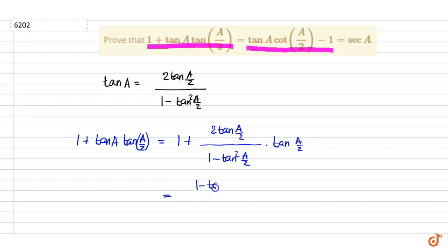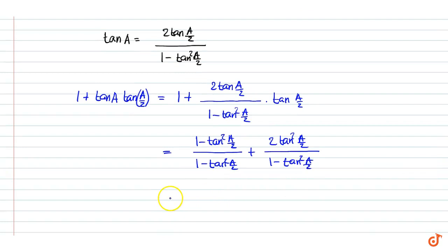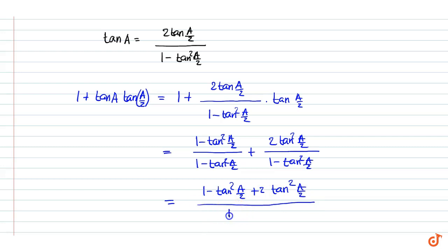This is equal to: 1 minus tan²(A/2) divided by 1 minus tan²(A/2), plus 2 tan²(A/2) divided by 1 minus tan²(A/2), plus 2 tan²(A/2) divided by 1 minus tan²(A/2).